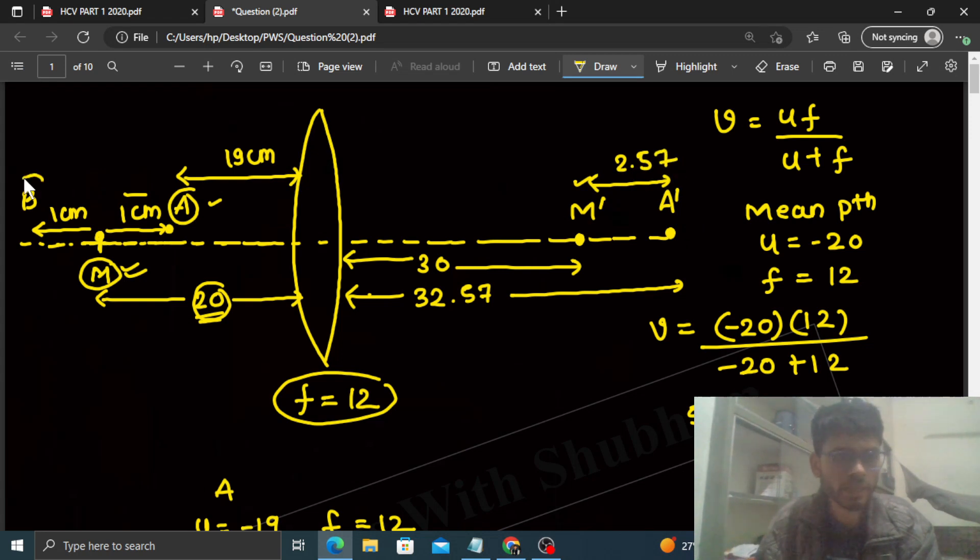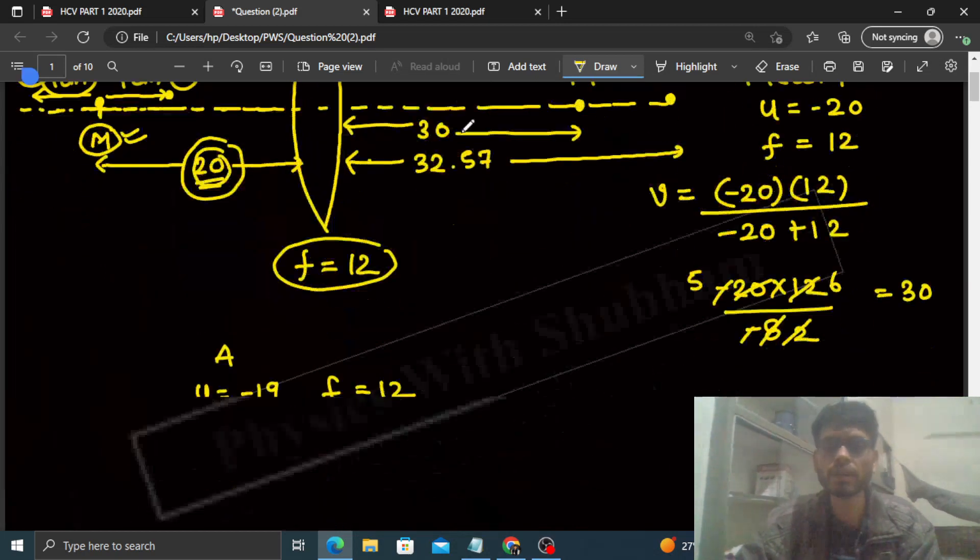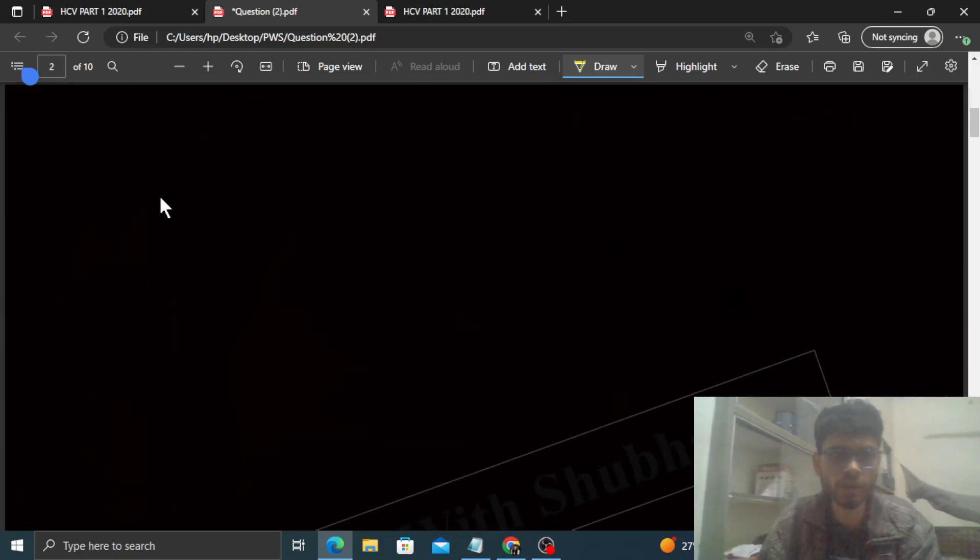Now let's talk about B. For B, the distance from the lens will be 20 plus 1, so that is basically 21. For point B, if we talk, the value of u will be minus 21. f value remains same at 12.